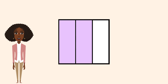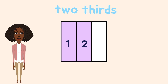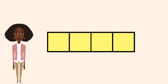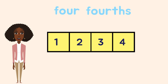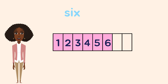Let's look at some more examples. First, I'll look at the amount shaded in — there are two parts shaded in. Next, I'll look at what the whole is partitioned into. I see three equal parts, so it's partitioned into thirds. The fraction shown here is two thirds. There are four parts shaded in. This whole is partitioned into fourths because there are four equal parts. This fraction shows four fourths. When an entire fraction is shaded in, we can also call it a whole, because all of the parts in the whole are shaded in. Six parts are shaded in, and this whole is partitioned into eighths. So this fraction shows six eighths.